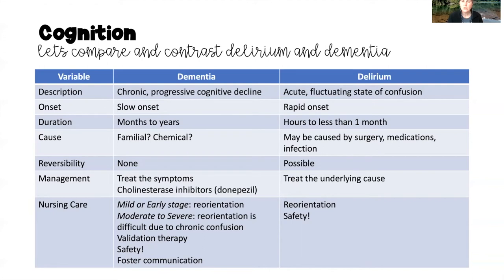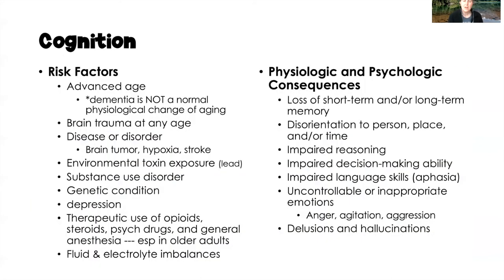From a nursing care perspective, we do reorientation in both cases; however, reorientation only works well with early or mild dementia and is great for clients with delirium. In moderate to severe dementia, we may use validation therapy instead. In both conditions, we really want to foster communication, but safety is the biggest priority — keeping these patients safe is your primary concern as a nurse.